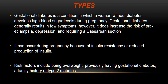Gestational diabetes occurs when a woman without diabetes develops high blood sugar during pregnancy. It increases risks of preeclampsia, depression, and caesarean section. It can result from insulin resistance or reduced insulin production during pregnancy. Risk factors include overweight, previously having gestational diabetes, or a family history of type 2 diabetes.